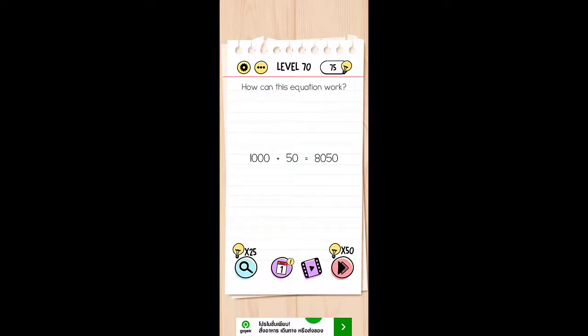How can the equation work? As you can see, level 70, you bring it down and that's it, it will work.